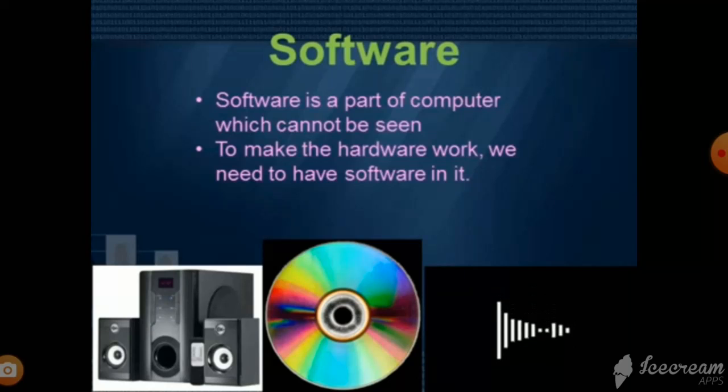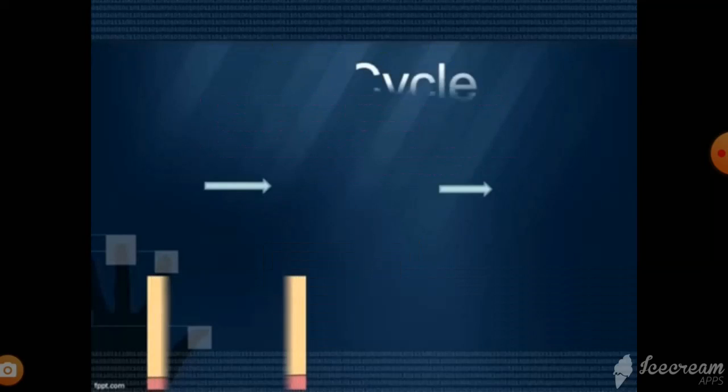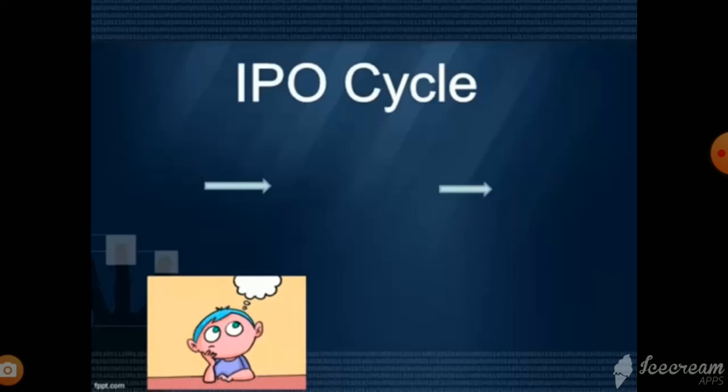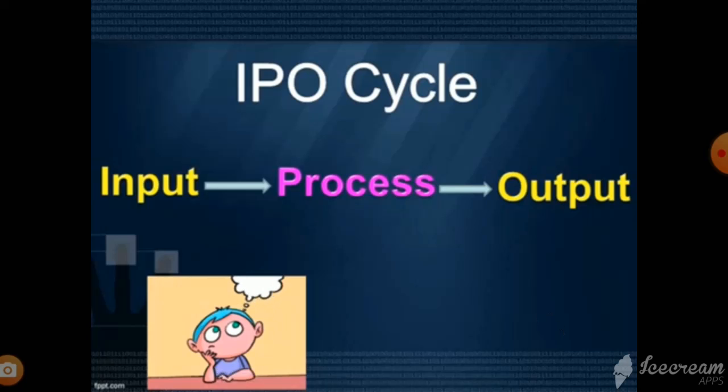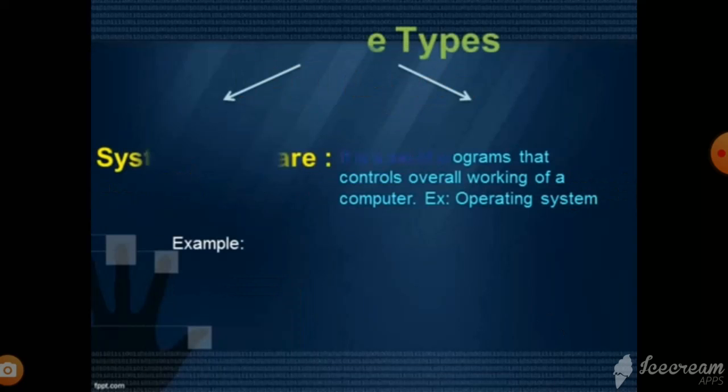Likewise, a TV is hardware and the programs you watch on it are software. So, children, do you remember the working of a computer? We have learned that a computer works on input, processing, output. It takes the input from the user, processes it, and displays the output on the monitor. Thus, we can define software as a set of instructions given to a computer to do a particular work.